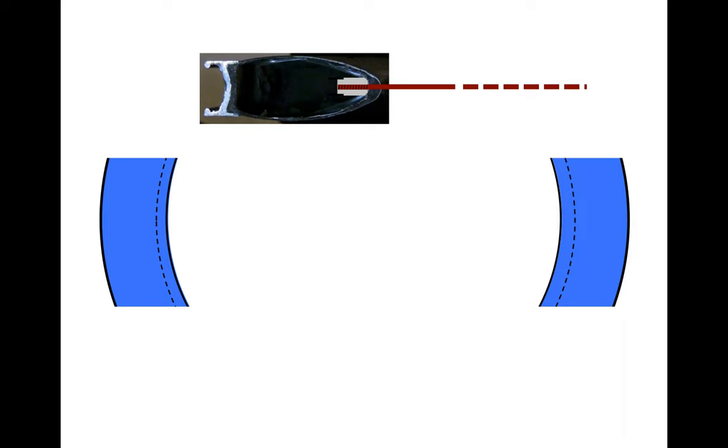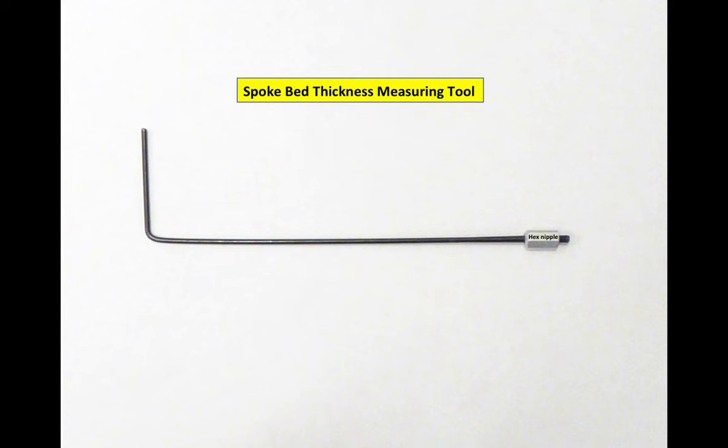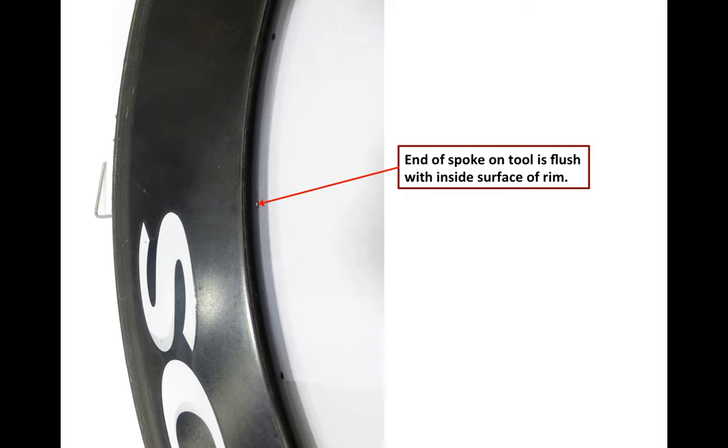and that the nipple is flush with the inside of the rim. Make yourself this little spoke bed thickness measuring tool. You just take a spoke and screw a hex nipple onto the end of it, and by screwing that nipple in or out, I can vary the amount of spoke that sticks out the end of the nipple.